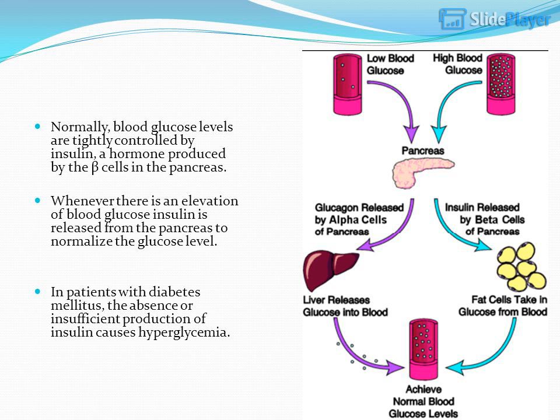Whenever there is an elevation of blood glucose, insulin is released from the pancreas to normalize the glucose level. In patients with diabetes mellitus, the absence or insufficient production of insulin causes hyperglycemia.